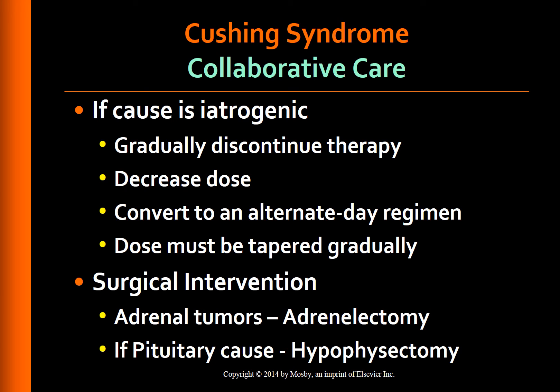Collaborative care. If Cushing's syndrome has developed during prolonged administration of corticosteroids such as prednisone, the following alternatives may be tried: gradual discontinuation of corticosteroid therapy, reduction of the corticosteroid dose, or conversion to an alternate-day regimen. Gradual tapering is necessary to avoid potentially life-threatening adrenal insufficiency. An alternate-day regimen involves giving twice the daily dose of a shorter-acting corticosteroid every other morning to minimize HPA suppression, growth suppression, and altered appearance. This regimen is not used when corticosteroids are given as hormonal therapy.